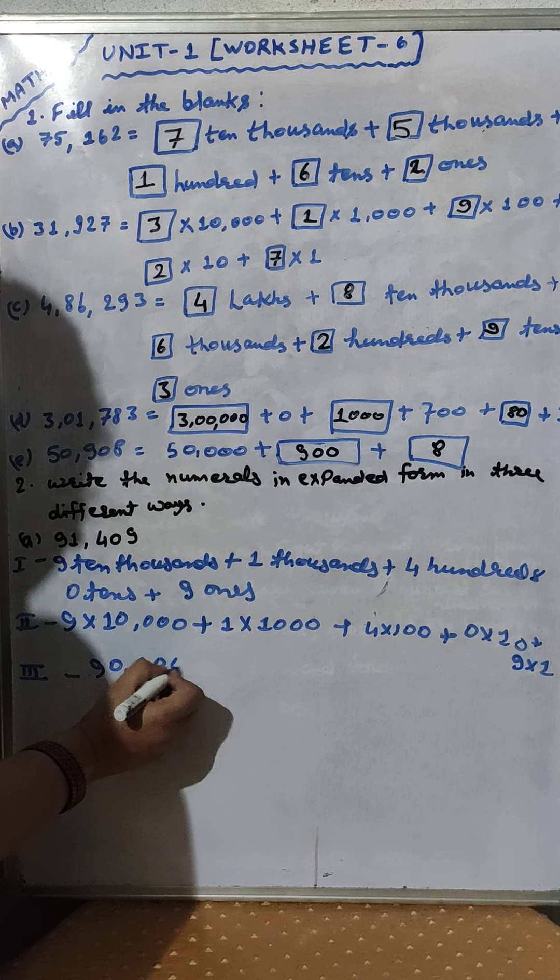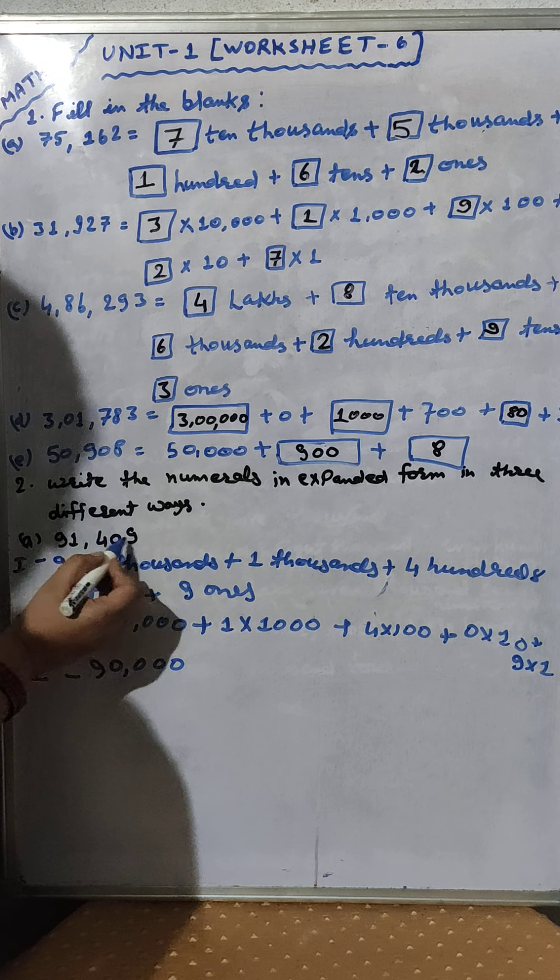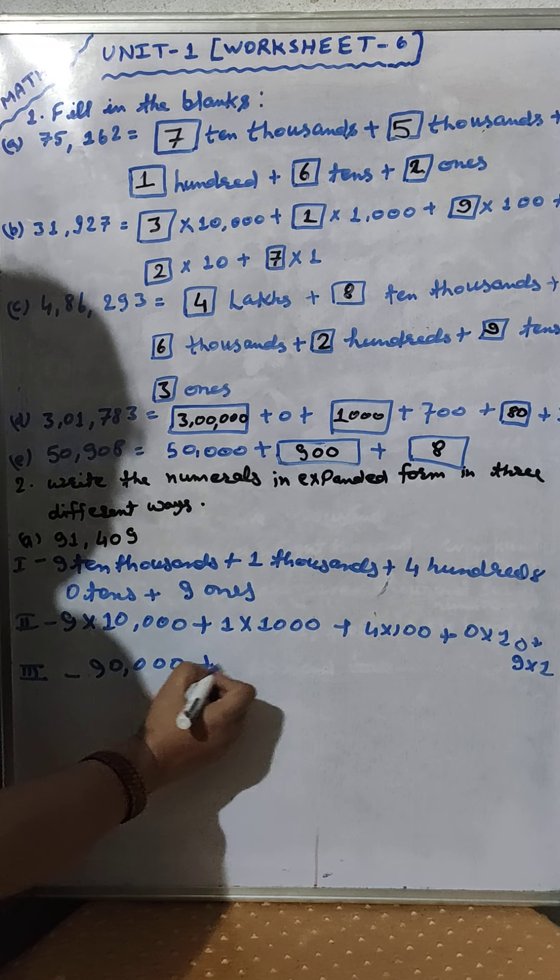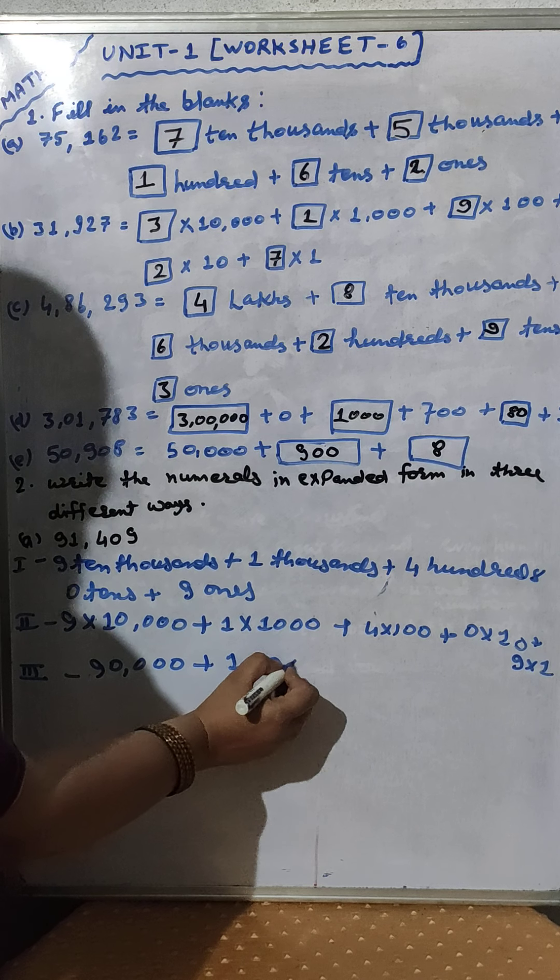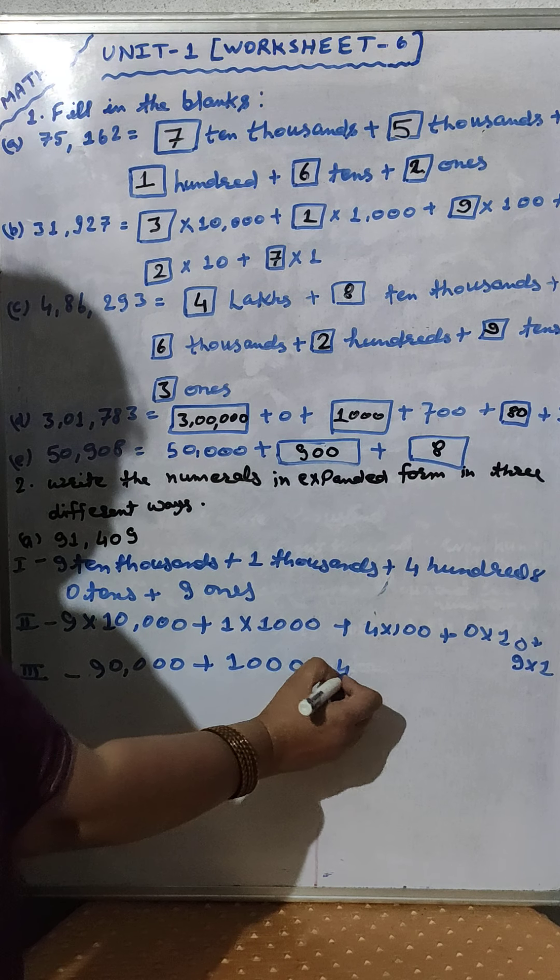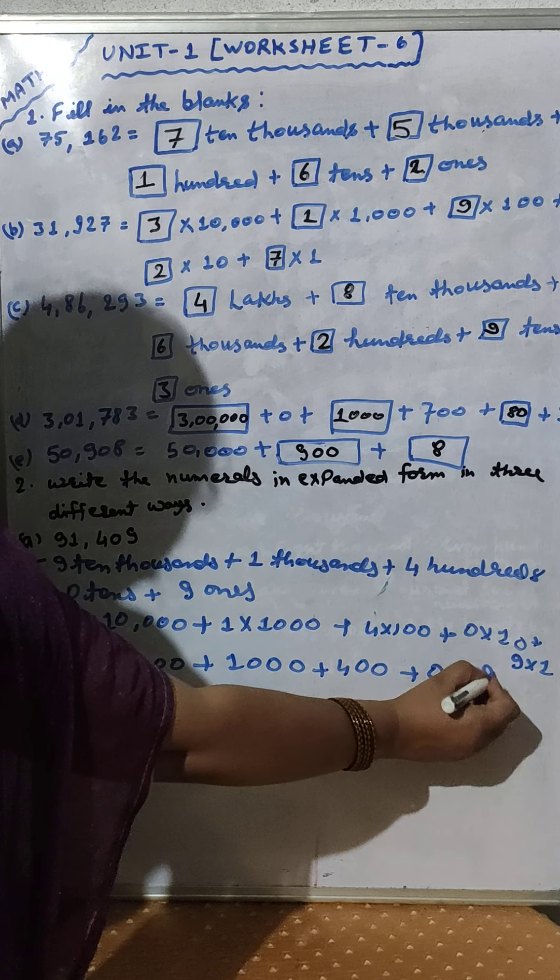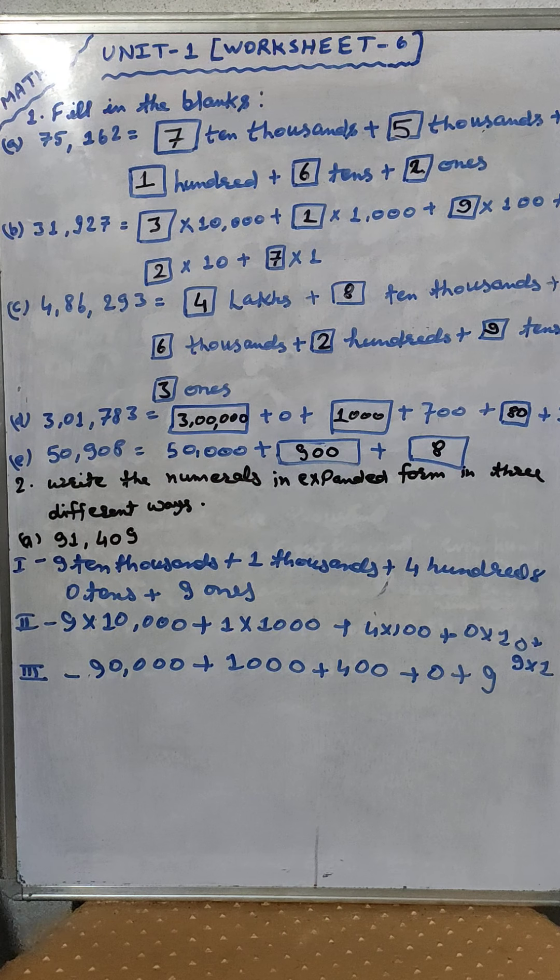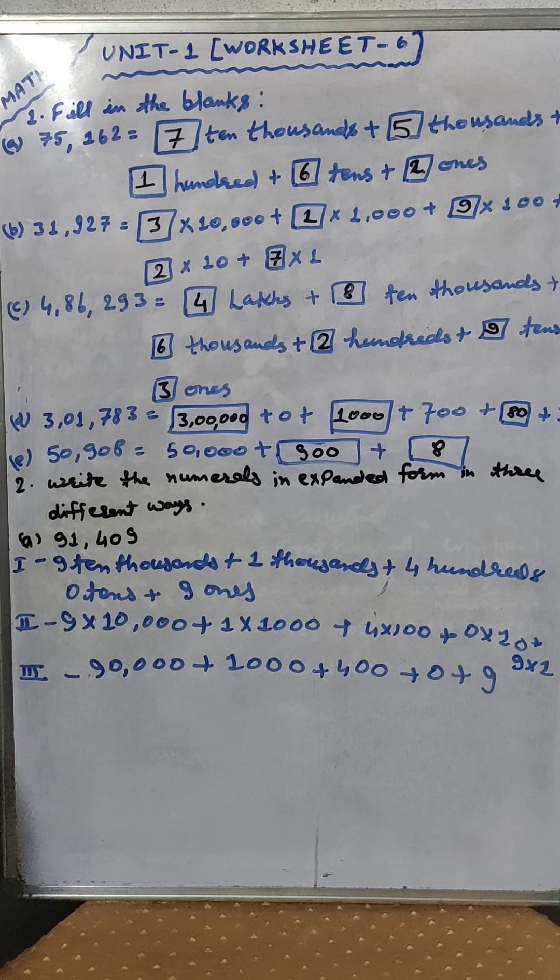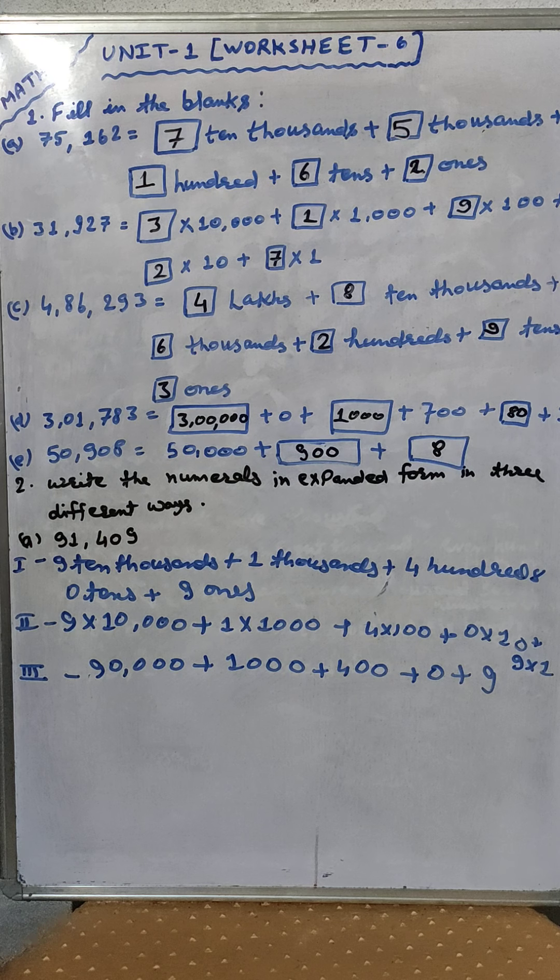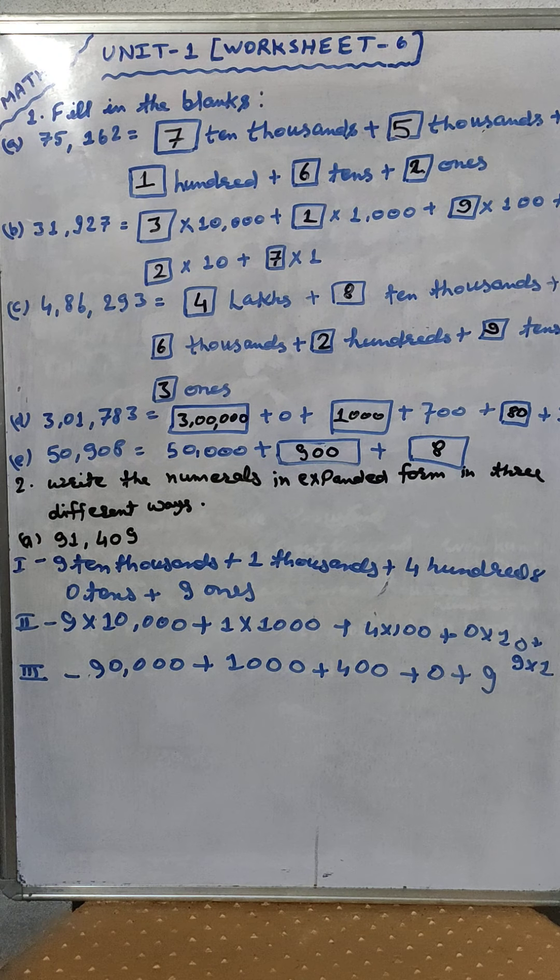Now third step: 90,000 plus 1000 plus 400 plus 0 plus 9. Through this method we can solve another question of 2, 1, 2, 3.